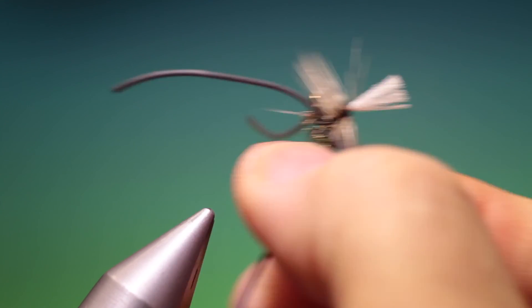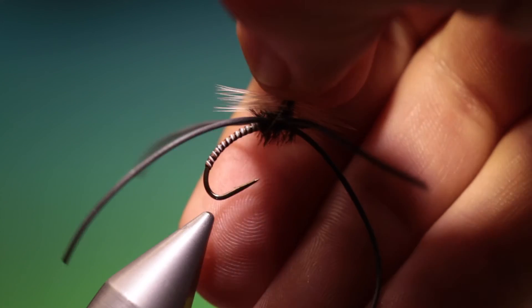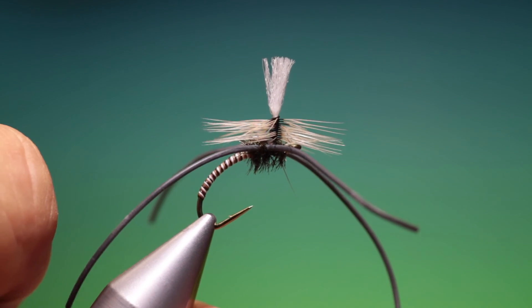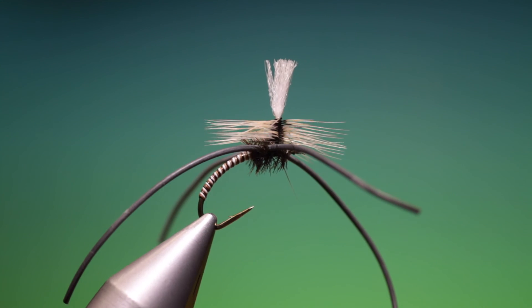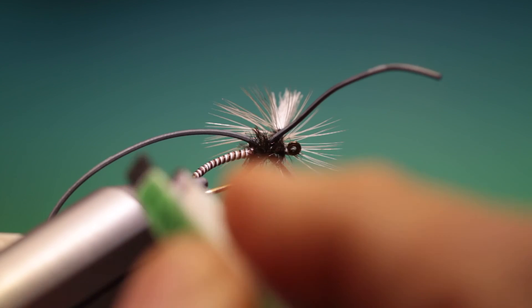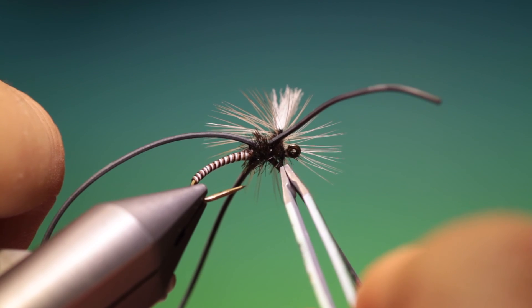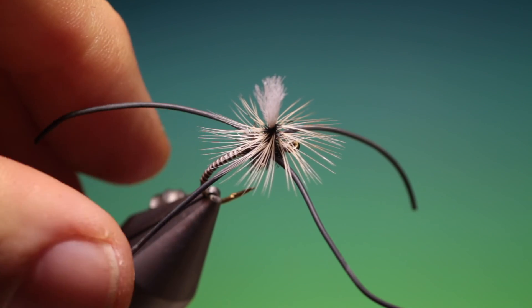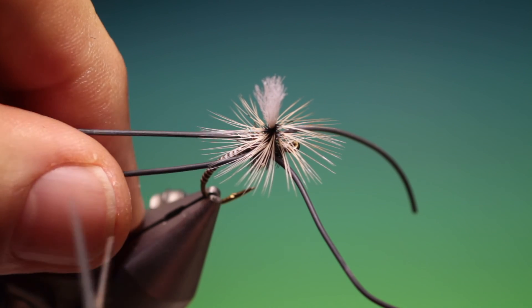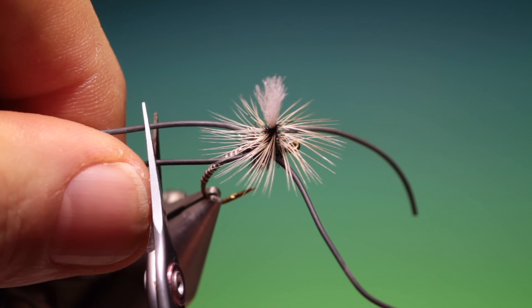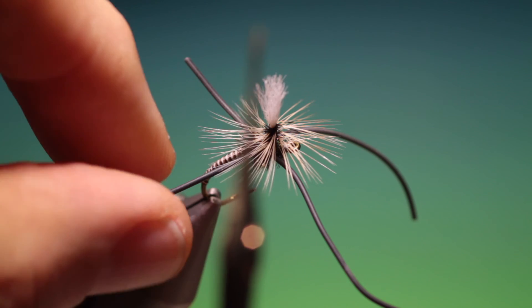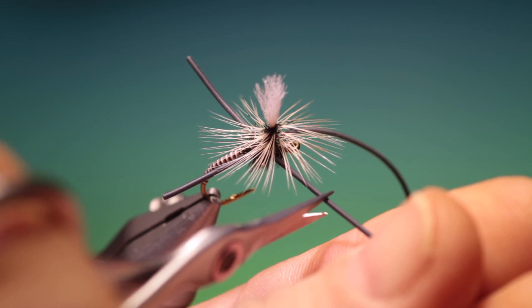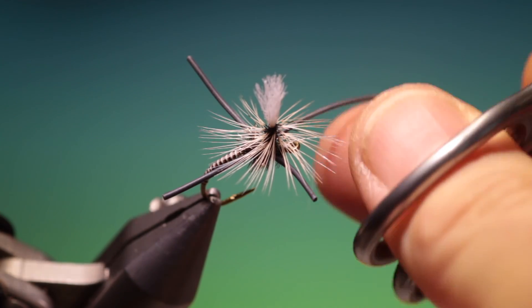Like so. There we can see the one hackle fibre that was trapped by my whip finish and just pulling that off. And then the back legs want to be a little longer than the front ones. And just trim those off. Like that. We've trimmed these off a little longer than the hackle.